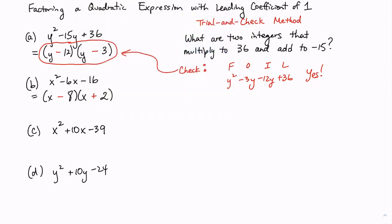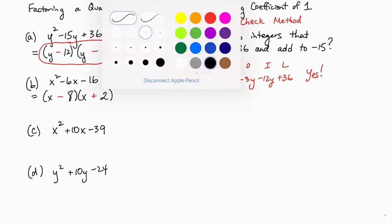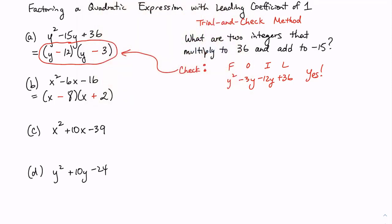Remember, you're not done until you actually check. First position, x squared. Outside position, plus 2x. Inside position, minus 8x. And then last position, minus 16. Once again, it's a yes. So when this checks, then circle your two factors. The first factor is x minus 8. The second factor is x plus 2.